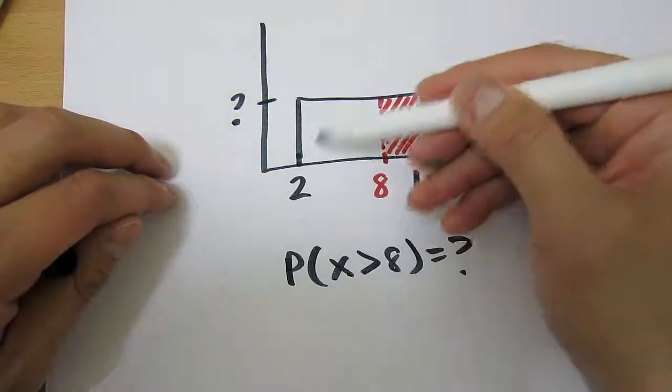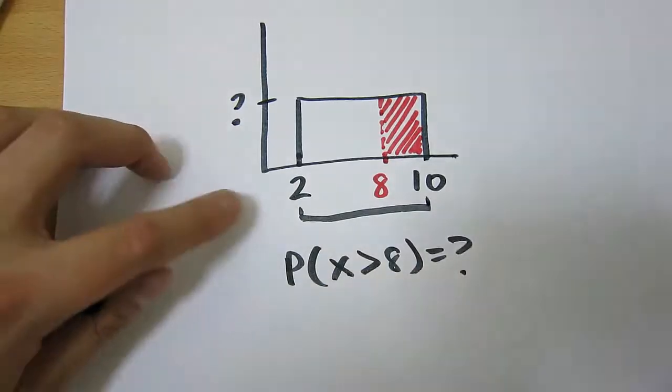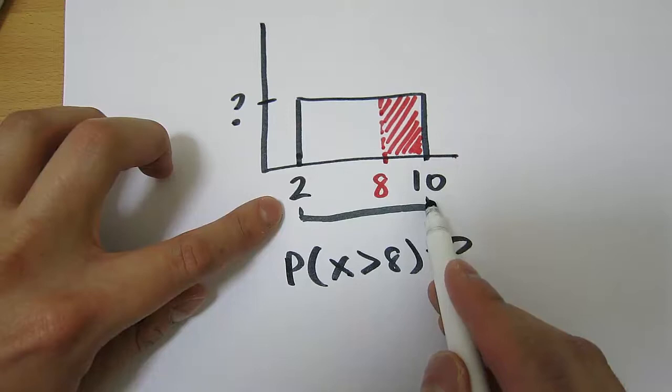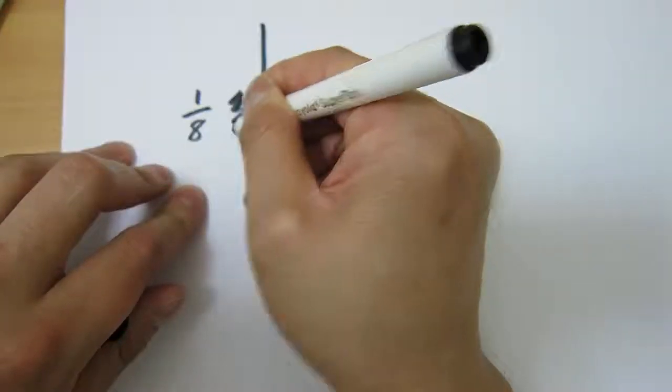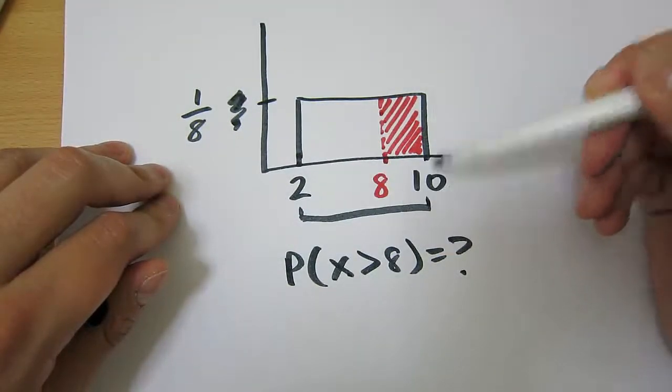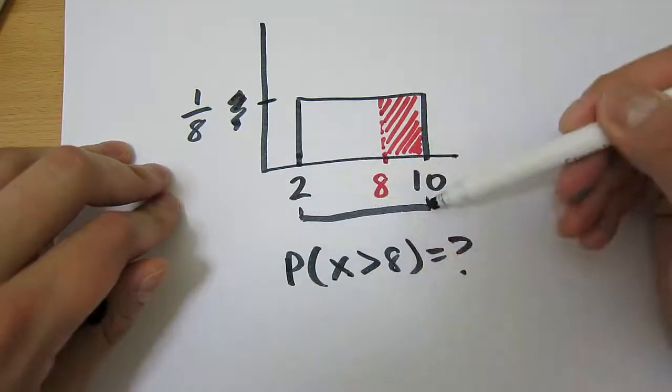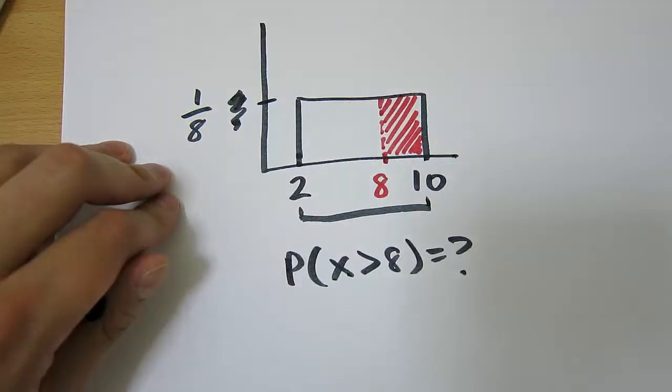So we know that the area is equal to 1 here. We know the base is equal to 10 minus 2 here, which is 8. Then the height must be 1 over 8. Okay, because if the base is 8 units, and if the height is 1 over 8, then the area inside the curve must be 1.